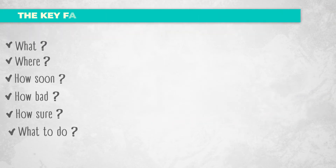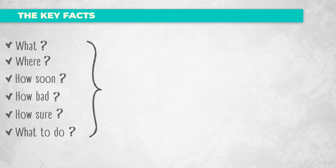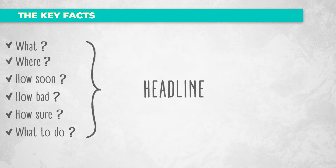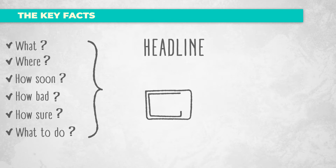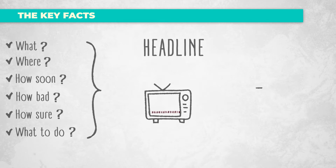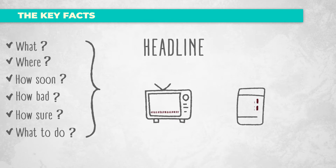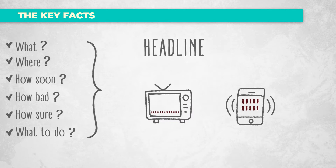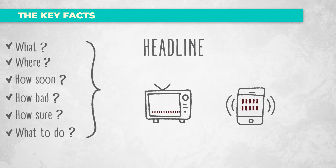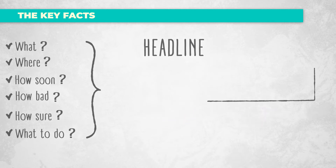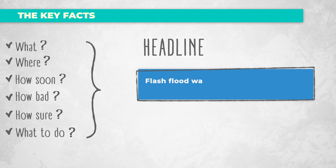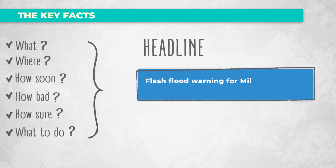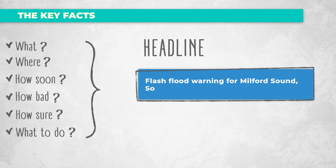Let's begin with the headline, which shows the intent of the message. The headline is often shown as television crawl text and is designed to fit an SMS message. For example: Flash Flood Warning for Milford Sound, Southland, New Zealand.